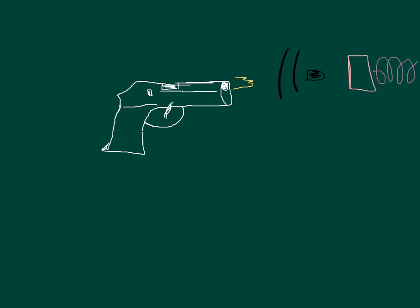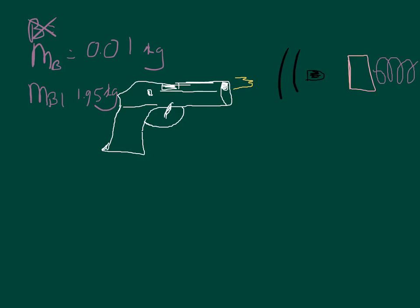So we have three different things. We have a bullet with a mass of 10 grams, or 0.01 kilograms. Then we have the block, mass of the block is 1.95 kilograms. And then we have the spring, which doesn't have a mass but has a force constant equal to 16.2 newtons per meter. The bullet has a velocity equal to 300 meters per second. And this is all we're given.